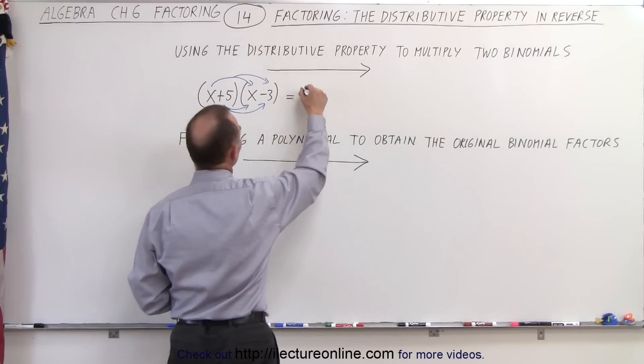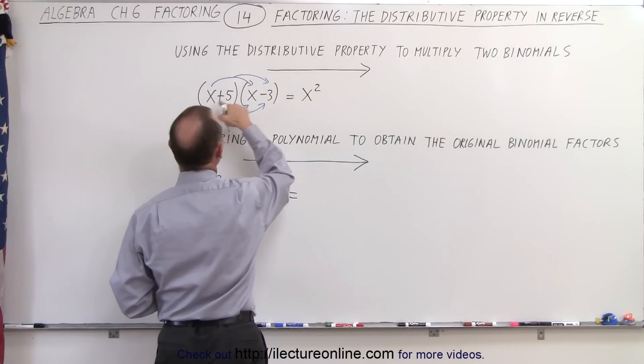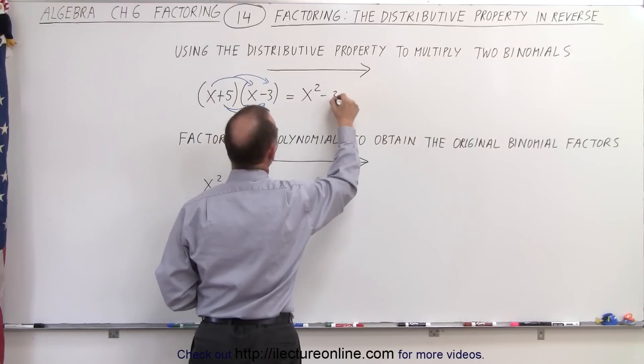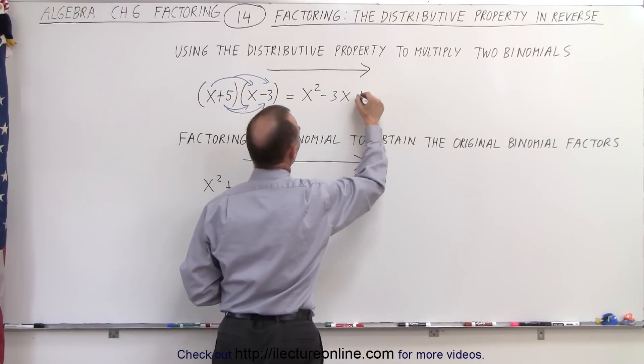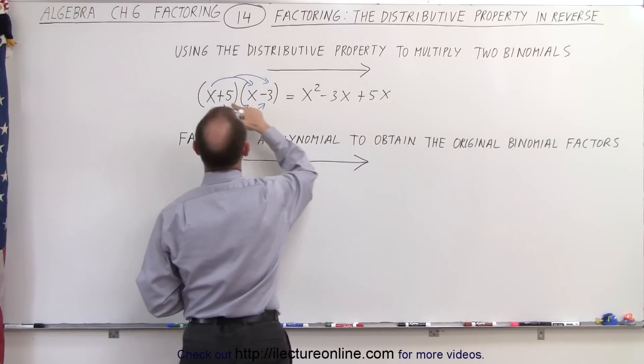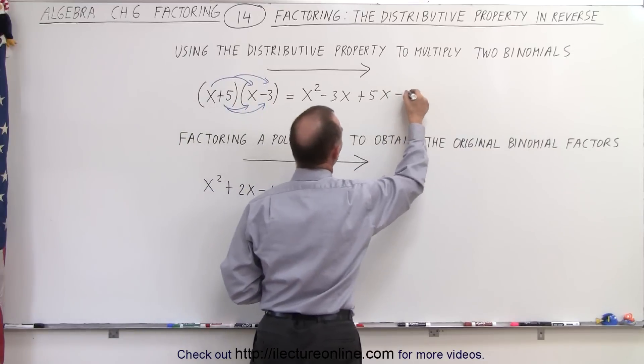We take x times x, which gives us x squared; x times negative 3, which gives us negative 3x; 5 times x, which gives us plus 5x; and 5 times negative 3 gives us minus 15.